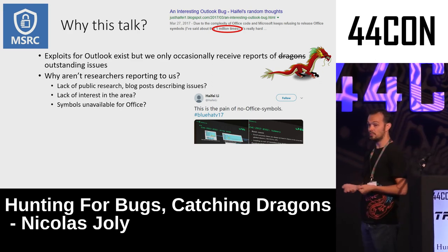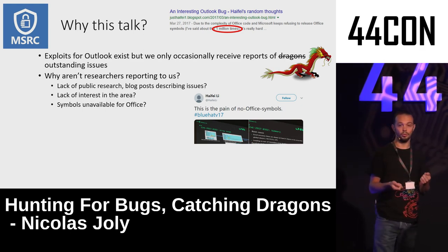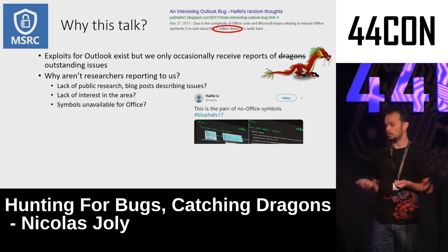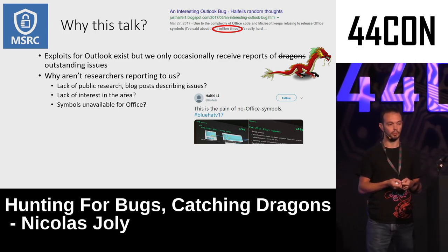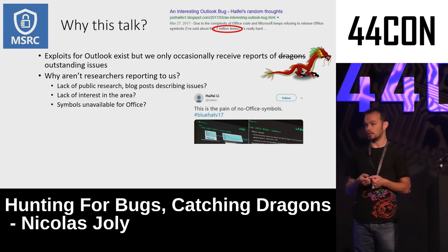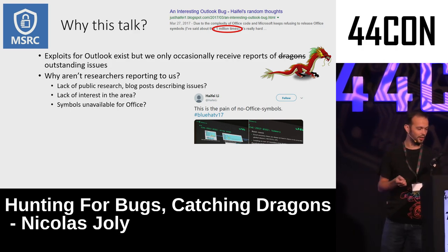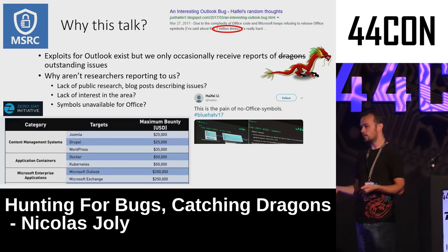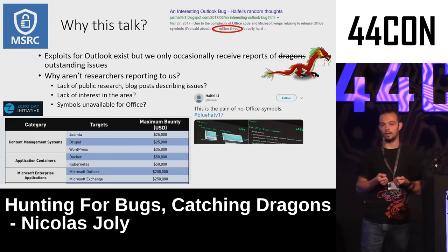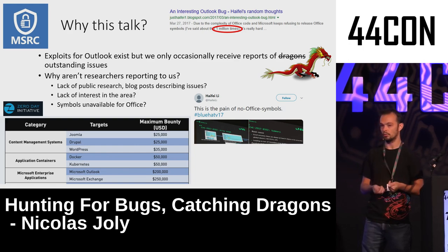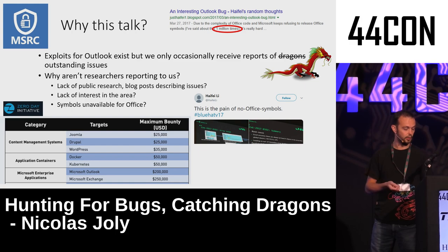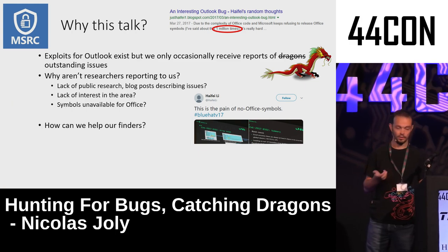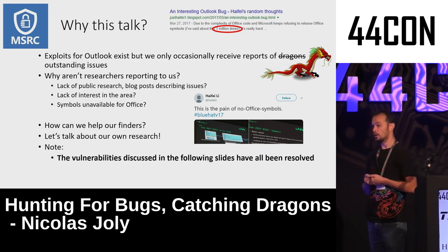Why are people not reporting to us? Partly because it's difficult — there are no scripting engines in the desktop client, it's not like attacking a browser. There are also no symbols for Office. But there are good bounty offers: Tipping Point offers $200K for Outlook and $250K for Exchange, and Zerodium offers $250K for Exchange or Outlook. There is room for research, and that's why I'm presenting things I've seen and things people have reported to us.